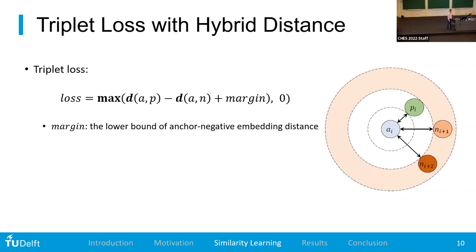Side-channel analysis offers more information than some other domains. Triplet networks are commonly used in NLP. But inside channel, we have the nice property that depending on the leakage model, some things are closer than others — consider the Hamming weight leakage model, where consumption is proportional to the Hamming weight, so Hamming weight two is closer to Hamming weight one than to Hamming weight seven. We can use that extra information about the labels to build what we call a hybrid distance, represented with a specific formula.